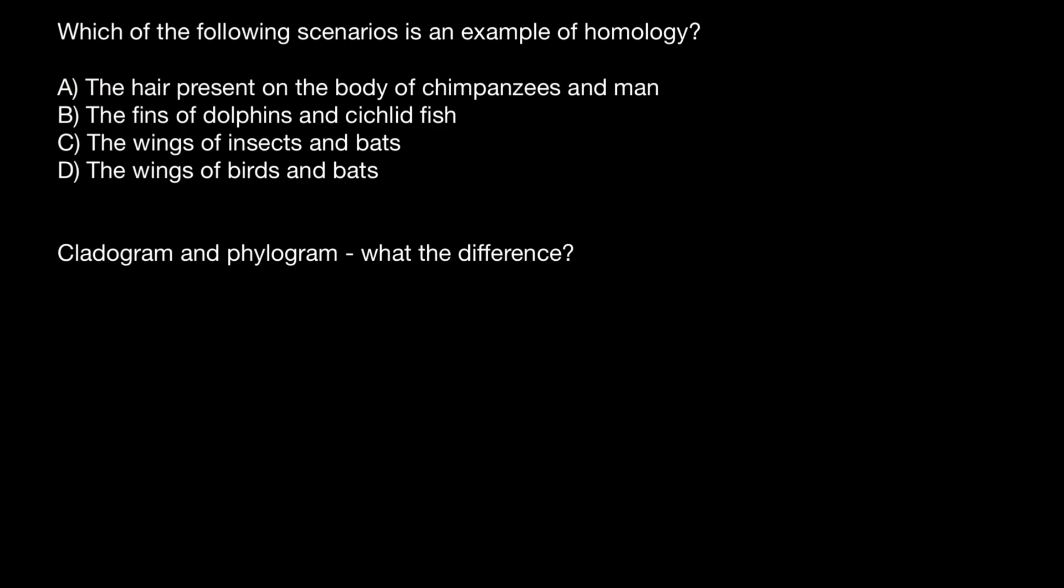And variant A, the hair present on the body of chimpanzees and man would be an example of homology, because both chimpanzees and men have a recent common ancestor that had hair. So chimpanzees and humans got this trait from our recent common ancestor. So this is an example of homology.